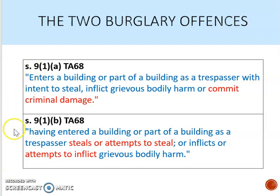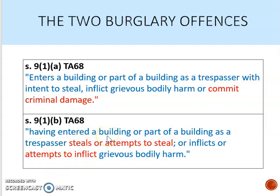Comparing Section 9-1-A to Section 9-1-B: a person commits burglary under Section 9-1-B if, having entered as a trespasser, he steals or attempts to steal anything in the building, or inflicts or attempts to inflict GBH on any person therein. The main difference is that under Section 9-1-A, the intent must be formed at the time of entry — before they go in — whereas under 9-1-B, the intent to commit the offence comes later, when they're already in the building. You'll also notice that 9-1-A covers criminal damage, whereas 9-1-B does not.